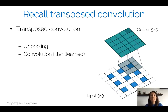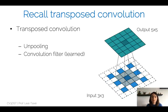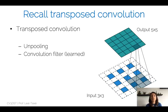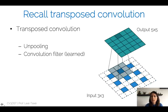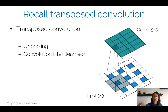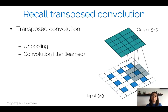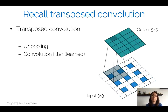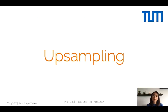Recall the notion of transpose convolution: going from a 3×3 input to a 5×5 output by first performing unpooling — spreading the 3×3 samples into a larger map — and then sliding a convolutional filter over this unpooled input to produce the 5×5 output. This combined operation of unpooling plus a learned convolutional filter, trained with backpropagation, is called transpose convolution.